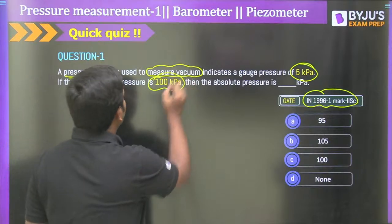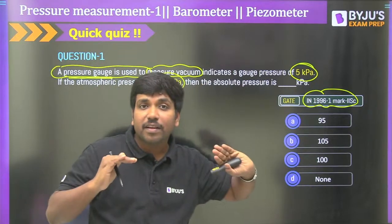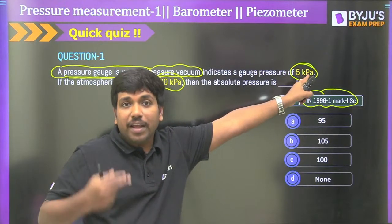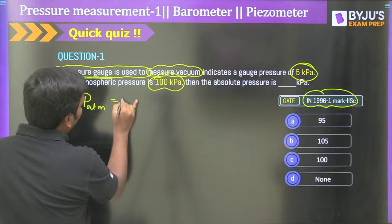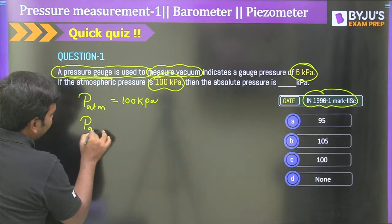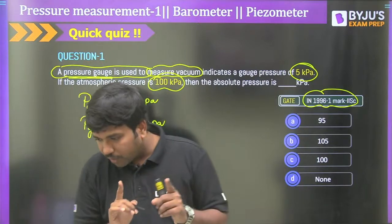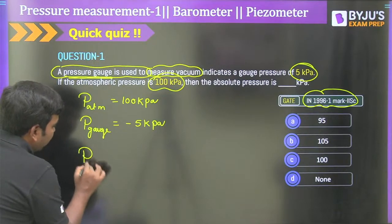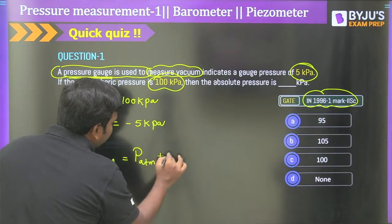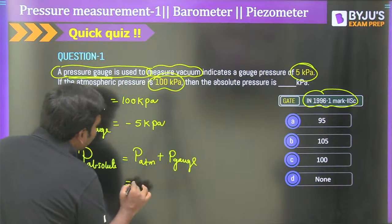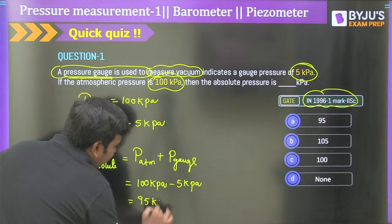The gauge is used to measure vacuum pressure — vacuum pressure means it is negative pressure. Even though the indication is 5 kilopascals, technically the value is minus 5 kilopascals. The atmospheric pressure is 100 kilopascals. So absolute pressure = atmospheric pressure + gauge pressure = 100 + (−5) = 95 kilopascals. This is where many students commit the mistake of taking gauge pressure as positive.